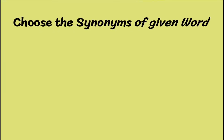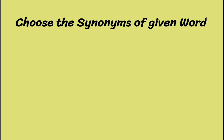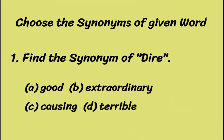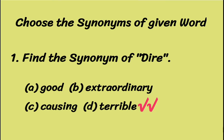The third section is: choose the synonym of the given word. A word will be given and you have to find its synonym from the options. The first question is: find the synonym of 'dire.' Options are: A — good, B — extraordinary, C — causing, D — terrible. Dire means something that horrifies, or something ugly or awful. So the most suitable synonym among these options is option D: terrible.